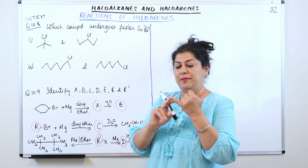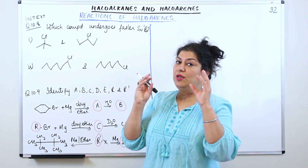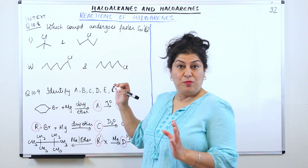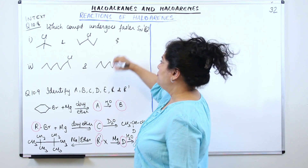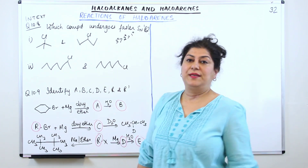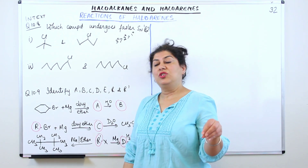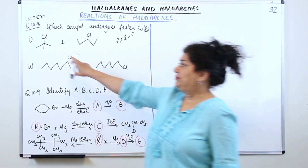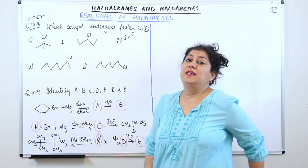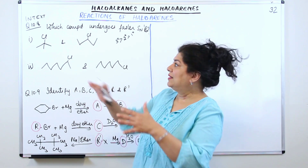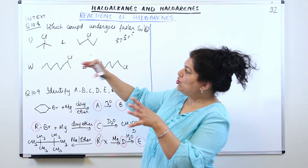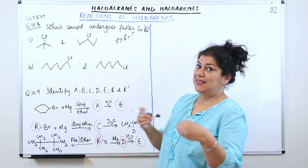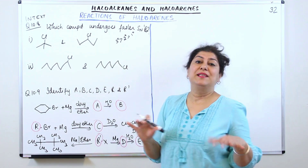So the two factors are stability of carbocation and steric hindrance — keep these in mind when deciding which compound undergoes SN1 faster. As far as carbocation is concerned, a tertiary carbocation is more stable than a secondary carbocation, which is more stable than a primary carbocation. So if the alpha carbon is tertiary, secondary, or primary, the carbocation is formed by the loss of the halogen, giving a positive charge at that carbon.